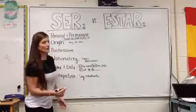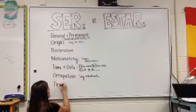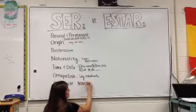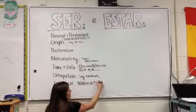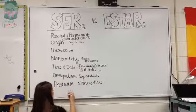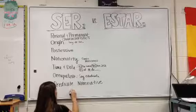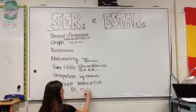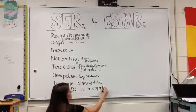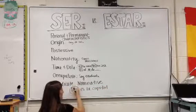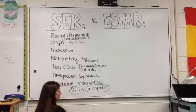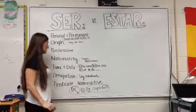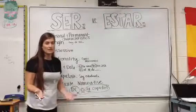The last P is a grammar concept called a predicate nominative. For example, 'DC es la capital' — this word and this word are referring to the same thing, connected by the verb ser. Like 'he is my brother' — he and my brother are the same person.